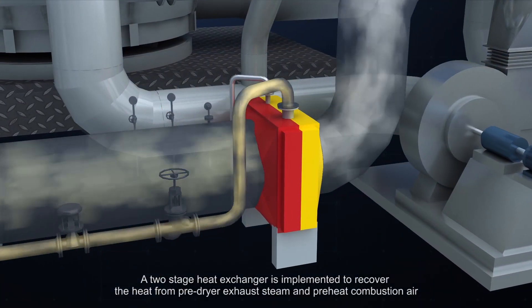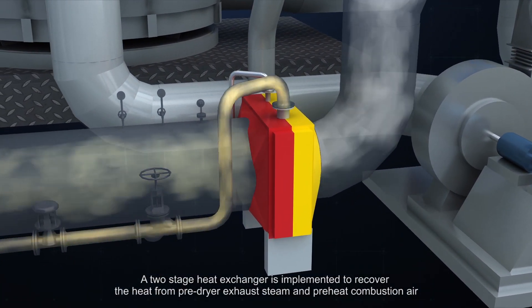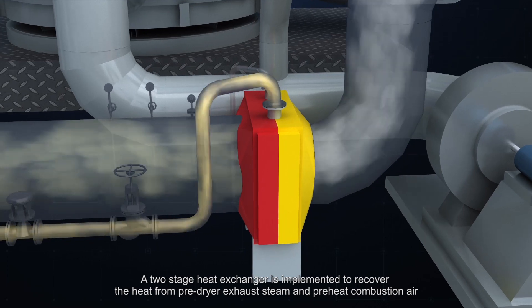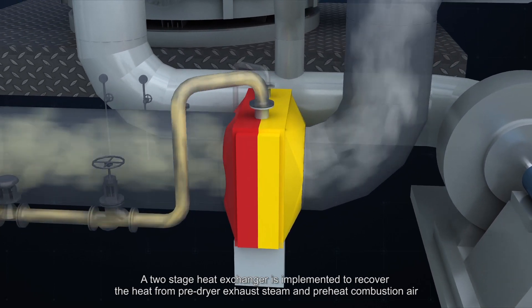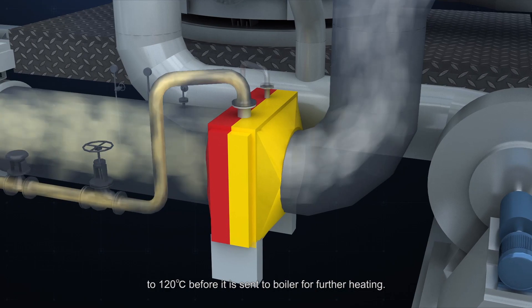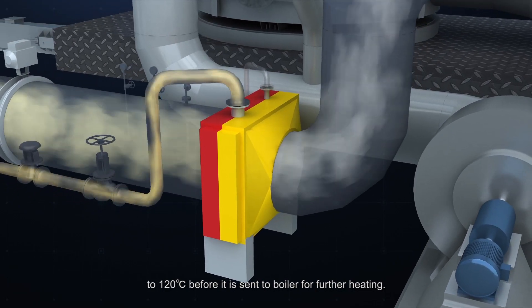A two-stage heat exchanger is implemented to recover the heat from pre-dryer exhaust steam and preheat combustion air to 120 degrees Celsius before it is sent to the boiler for further heating.